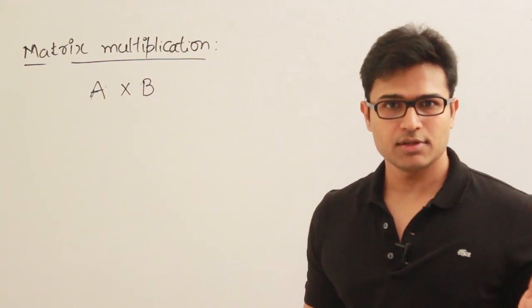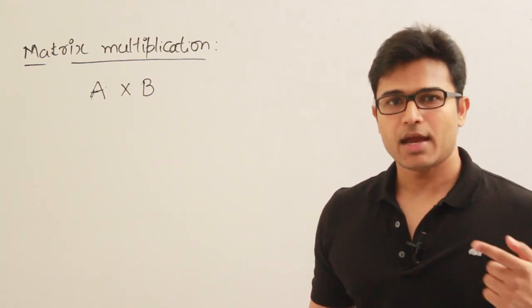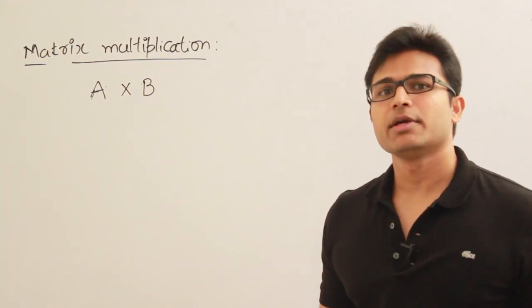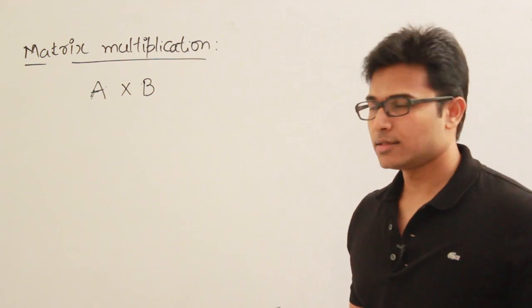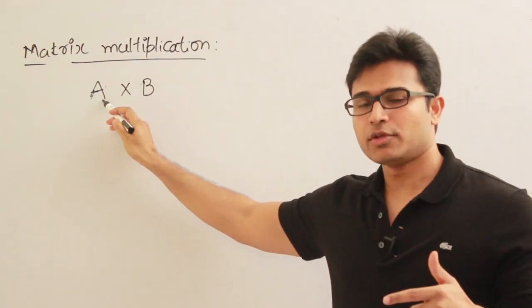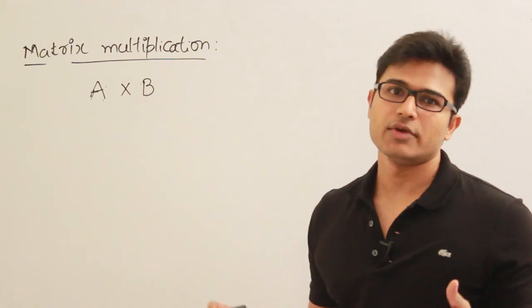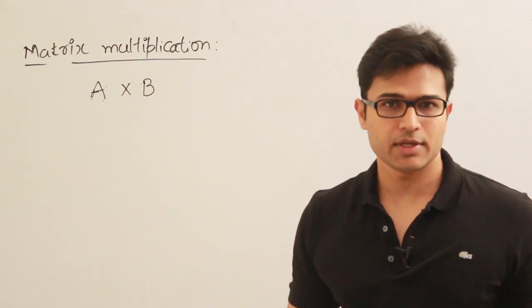In case of addition, both sizes have to be the same. And in case of multiplication, remember this: the number of columns in A should be equal to the number of rows in B. Then only we can multiply them.